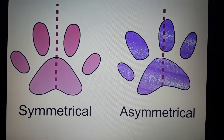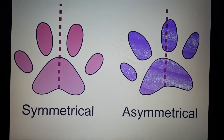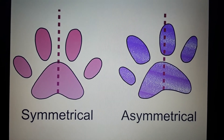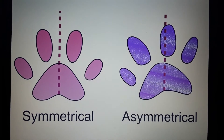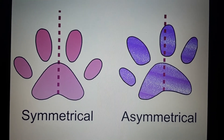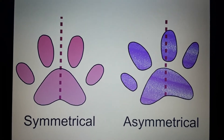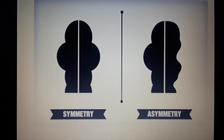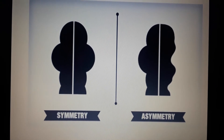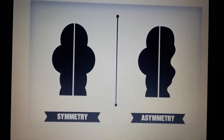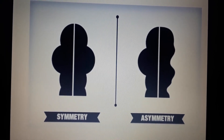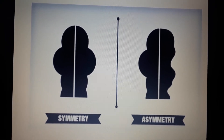Look at these two pictures — the first one is symmetrical, both sides exactly the same. The second one is asymmetrical, the sides are not equal. Look at this picture — the first one is asymmetrical, the second one is asymmetrical.